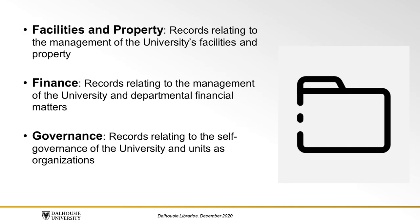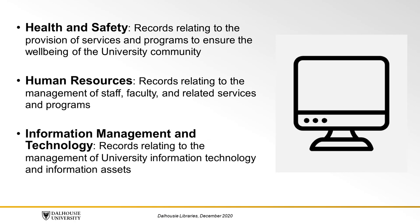Facilities and Property: records relating to the management of the university's facilities and property. Finance: records relating to the management of the university and departmental financial matters. Governance: records relating to the self-governance of the university and units as organizations. Health and Safety: records relating to the provision of services and programs to ensure the well-being of the university community. Human Resources: records relating to the management of staff, faculty, and related services and programs. Information Management and Technology: records relating to the management of university information technology and information assets.